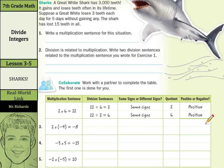As we look at our real-world link involving sharks! A great white shark has 3,000 teeth. It gains and loses teeth often in its lifetime. Suppose a great white loses 3 teeth each day for 5 days without gaining any. The shark has lost 15 teeth in all. Write a multiplication sentence for this situation. Well, if we're losing 3 teeth, that's negative 3 times the 5 days equals negative 15.